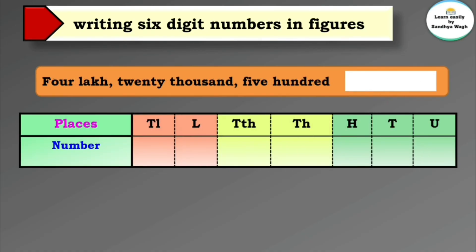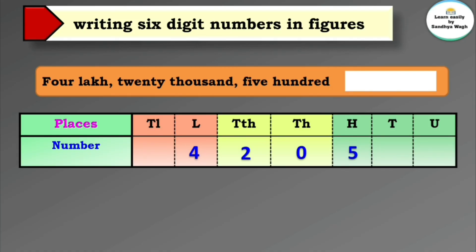Let's see one more example: four lakh 20,500. Write four in the lakhs place. 20,000 means two ten thousands and zero thousands, so write two and zero. Then five hundred — write five in the hundreds place. Tens and units are not mentioned, so write zeros. So four lakh twenty thousand five hundred in figures is written as 4,20,500.